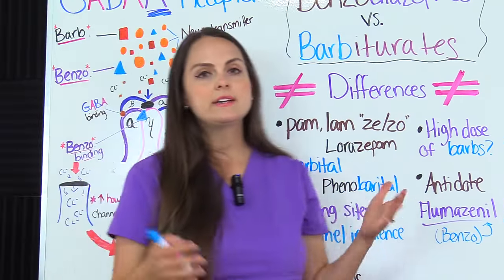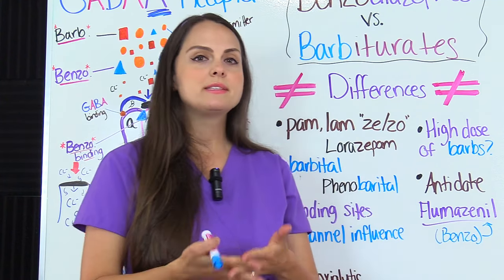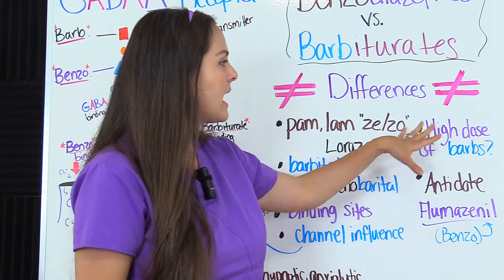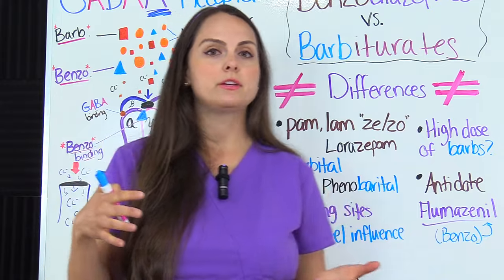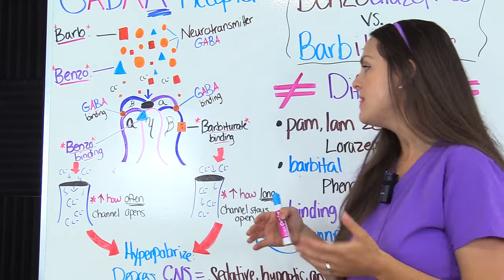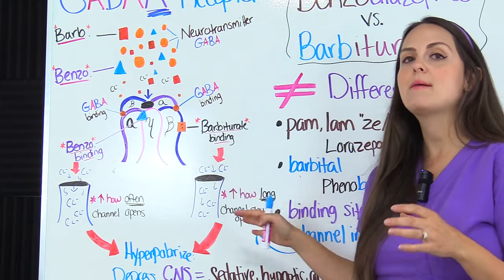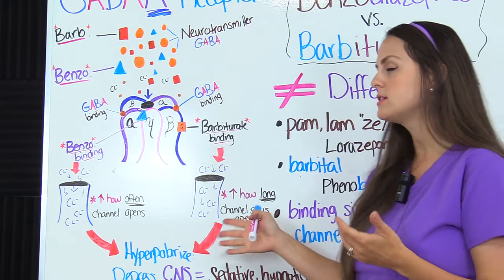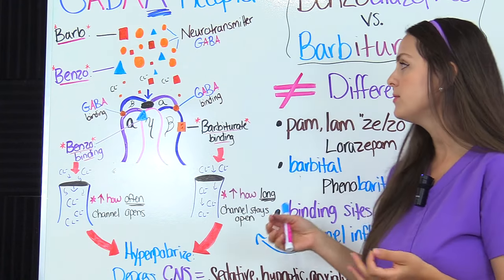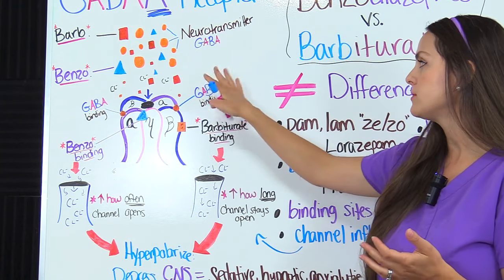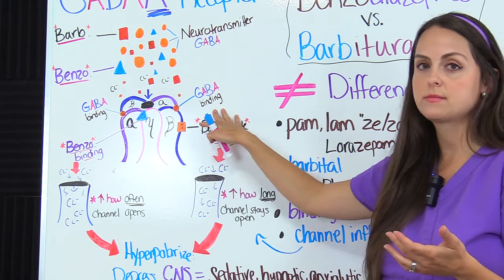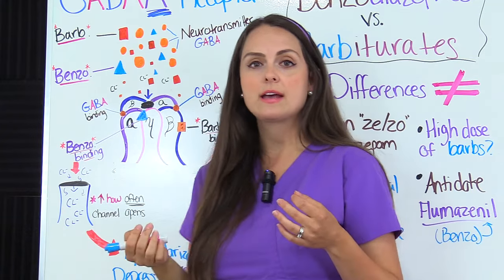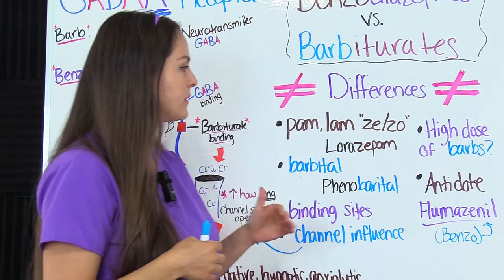One neat difference about barbiturates that benzodiazepines cannot do: in high doses, barbiturates can actually influence the GABA-A receptor and cause the channel to open without the influence or help of the neurotransmitter GABA. Benzodiazepines cannot do that.